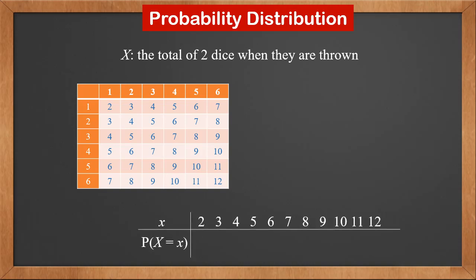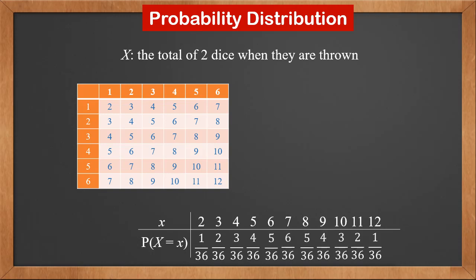In the probability distribution table, the first row is little x with all possible values. The second row is P(X = x). We count the number of cases for each x in the table. There is 1 case for x = 2, so P(X = 2) = 1/36. There are 2 cases for x = 3, so P(X = 3) = 2/36. We do the same for the rest, putting corresponding probabilities under all numbers.